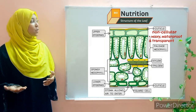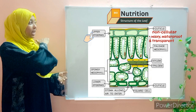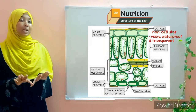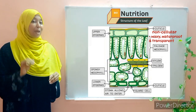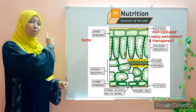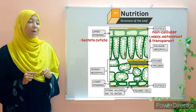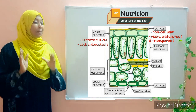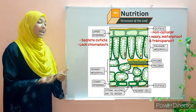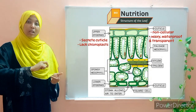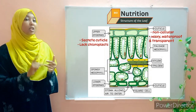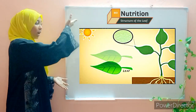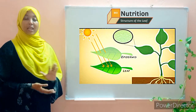The epidermal layer is found just below the cuticle. We have the upper epidermis on the upper surface and the lower epidermis on the lower surface. The epidermal cells are responsible for secreting the cuticle. They lack chloroplasts and, like the cuticle, play a protective role against mechanical damage and pathogen entry. They are also transparent, allowing light to pass through to the palisade tissue below.